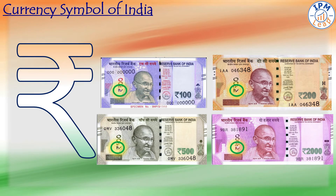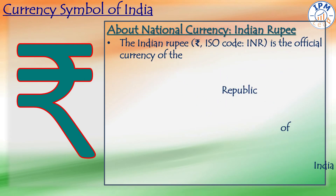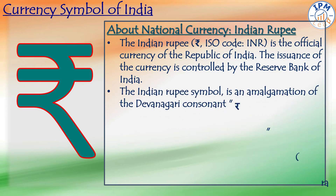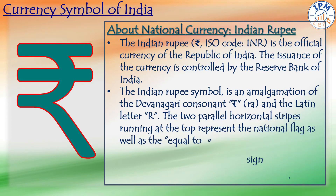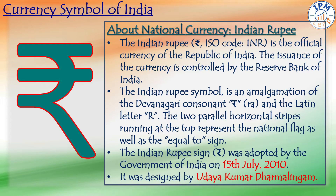Now let's talk about the currency symbol of India. This symbol denotes the Indian rupee and can be found on all currency notes and coins. The Indian rupee, also coded INR, is the official currency of the Republic of India, and its issuance is controlled by the Reserve Bank of India. The symbol is an amalgamation of the Devanagari consonant 'Ra' and the Latin letter 'R.' The two parallel horizontal stripes running at the top represent the national flag as well as the equal-to sign. The Indian rupee sign was adopted on 15 July 2010 and was designed by Uday Kumar Dharmalingam.